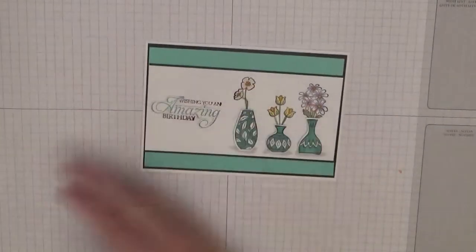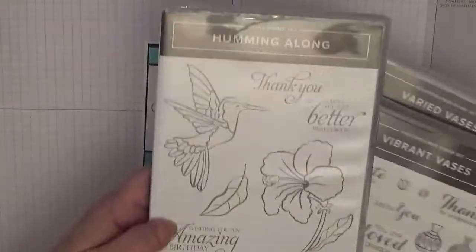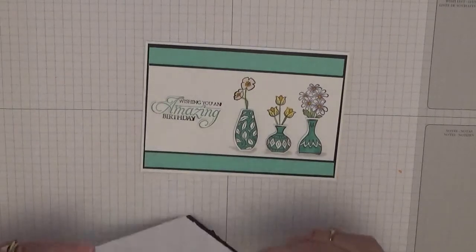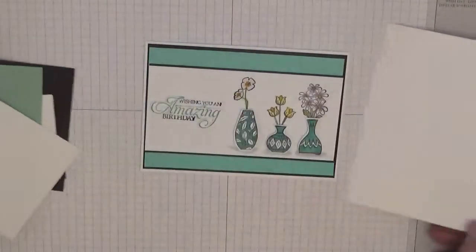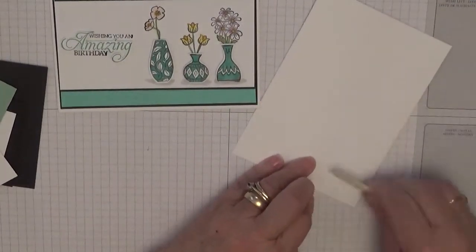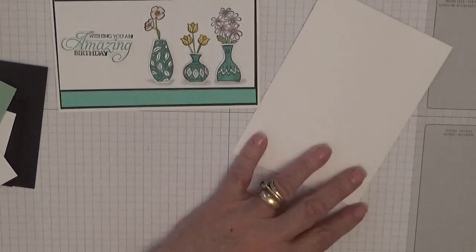For the sentiment that comes from Humming Along, I'm using that sentiment. For the cardstock, you need a card base of eight and a quarter by five and seven eighths, scored at four and one eighth. I folded it in half and burnished.